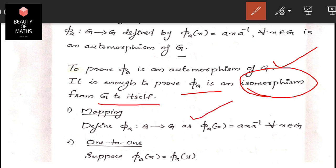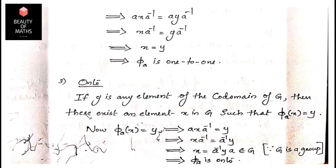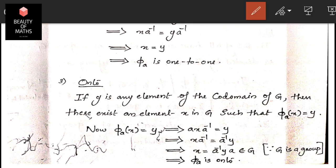To show φ_a is one-to-one: suppose φ_a(x) = φ_a(y). Then axa⁻¹ = aya⁻¹. By left cancellation, a cancels on the left giving xa⁻¹ = ya⁻¹. By right cancellation, a⁻¹ cancels on the right, giving x = y. Thus φ_a is one-to-one.